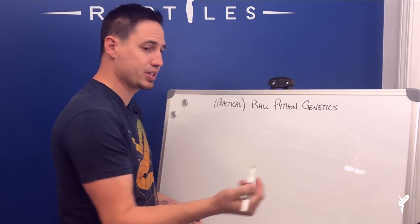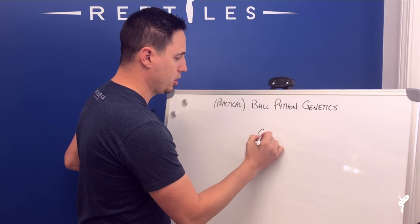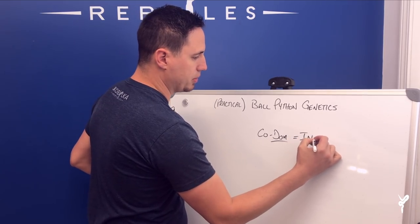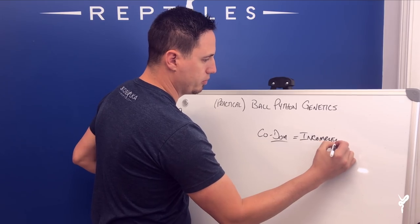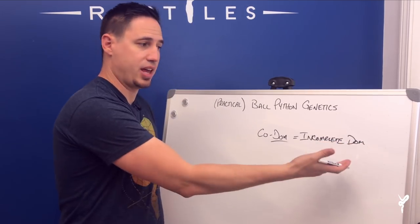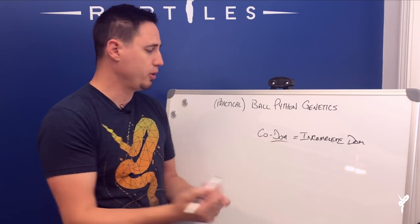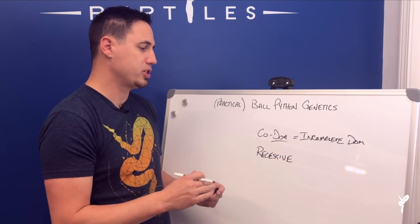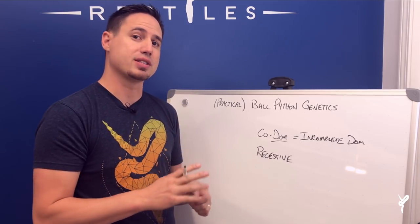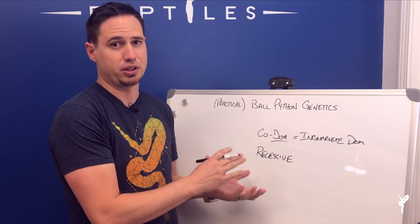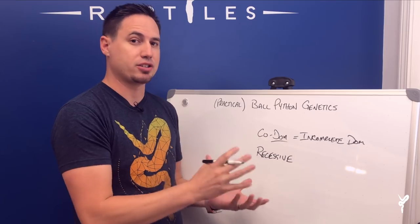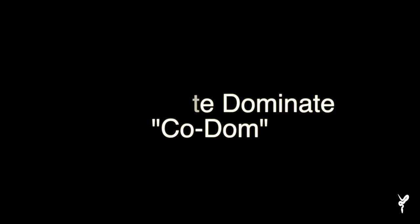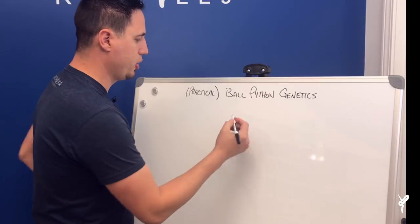We're talking about two basic terms. We have two different types of mutation: co-dominant — you've heard 'co-dom' a lot, but the actual term is incomplete dominant. The other one is recessive. People think they look very different from each other, but in reality the genetics work exactly the same. The only difference is what you're able to know about the clutch when they come out. In many ways they work mathematically exactly the same.